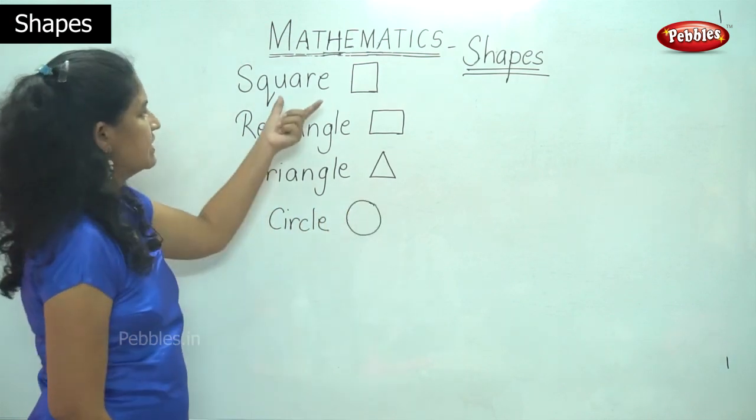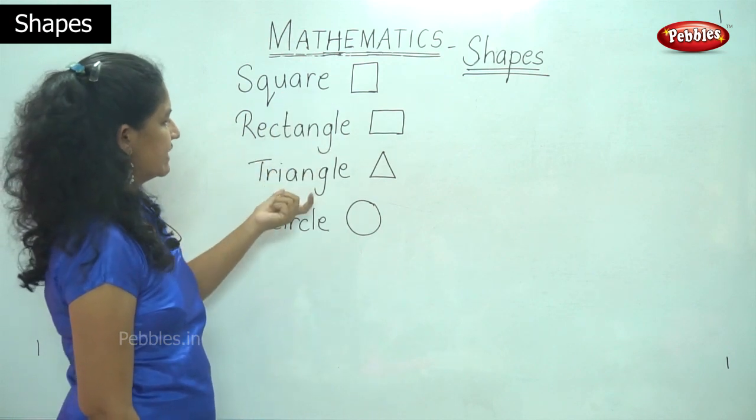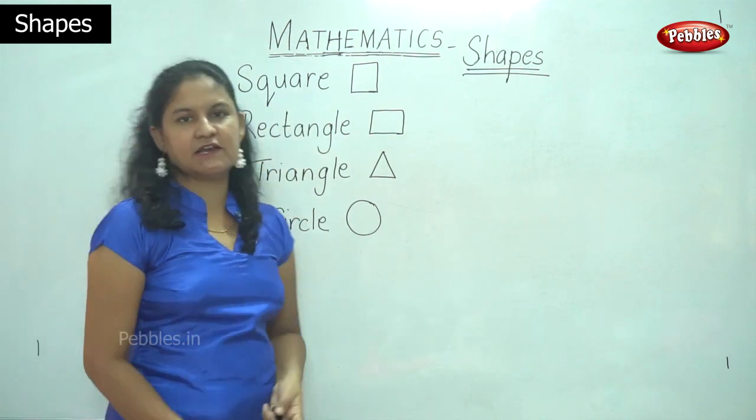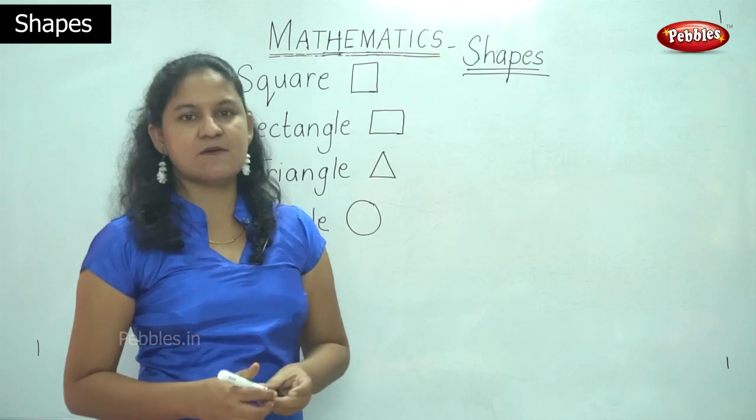So we have seen about square, we have seen rectangle, triangle, circle. Now we will be moving on to some more objects.